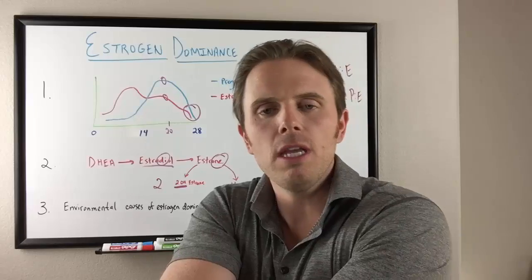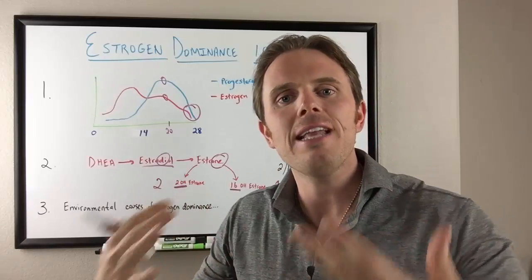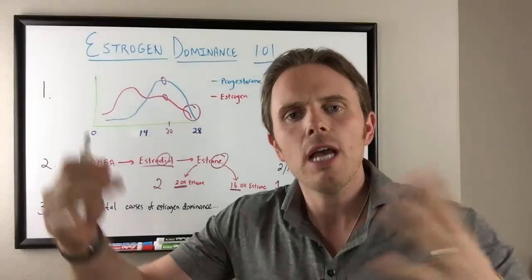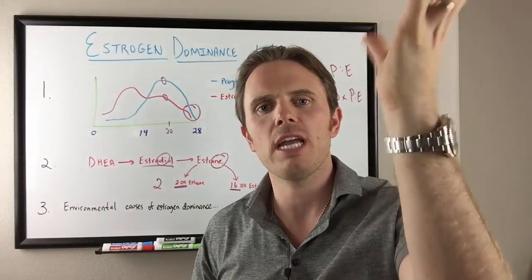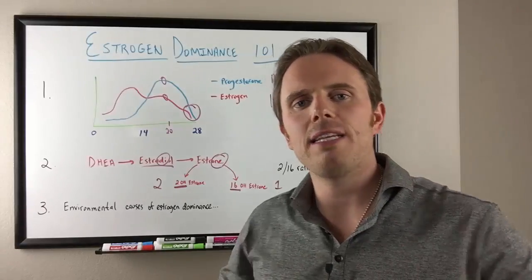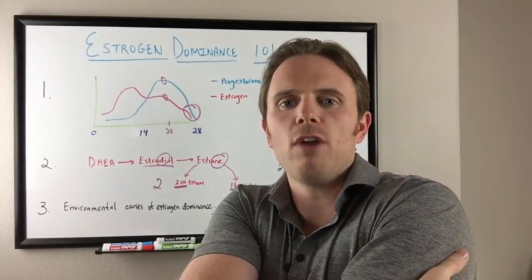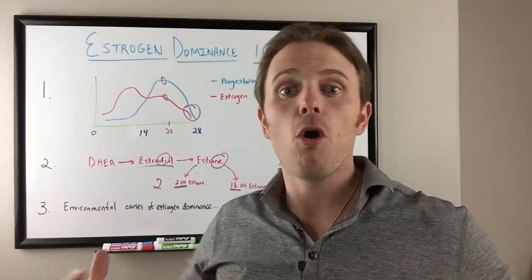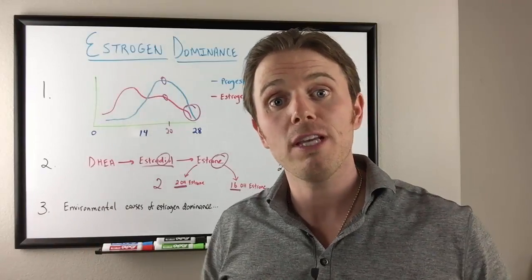Now beta-glucuronidase, this enzyme that occurs when we have dysbiosis, a high amount of bad bacteria in the gut in relationship to good bacteria, that beta-glucuronidase comes in, it unhooks the straight jacket and now the estrogen can go back and become reabsorbed and create lots of hormonal issues.